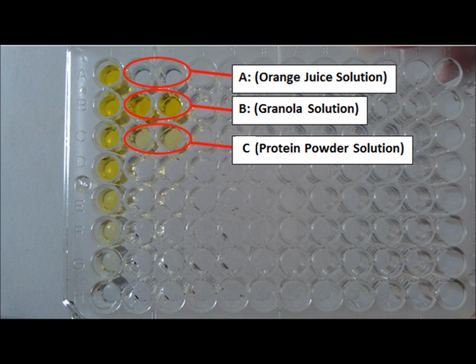As you can see, product B, granola, contained the most target almond antigen. Product C, protein powder, contains some of the antigen. Finally, product A, OJ, has no target antigen.